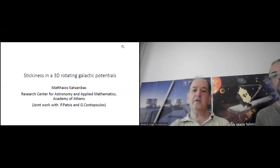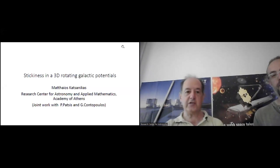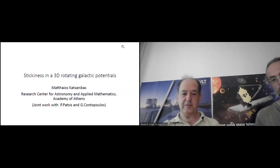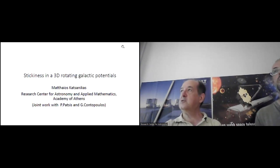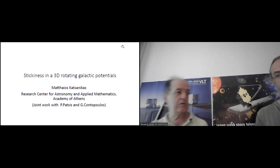Welcome everybody to today's seminar given by Marthos Kazanikas. Today we almost do not need an introduction — it is an internal speaker's seminar. Marthos was for years here at the Research Center for Astronomy on various projects. He went to Bristol and came back a few months ago in a researcher C position. The title of the talk is about stickiness in 3D Hamiltonian systems and rotating galactic potentials, and he will present what we know about that until today.